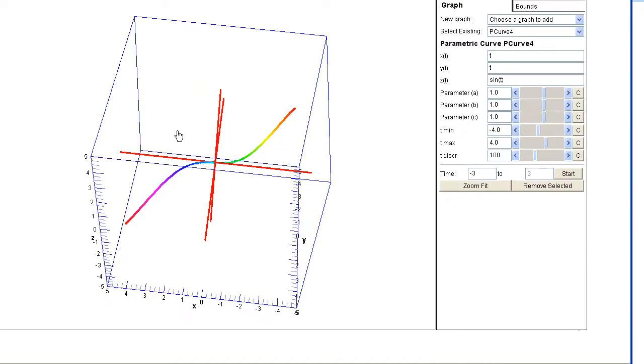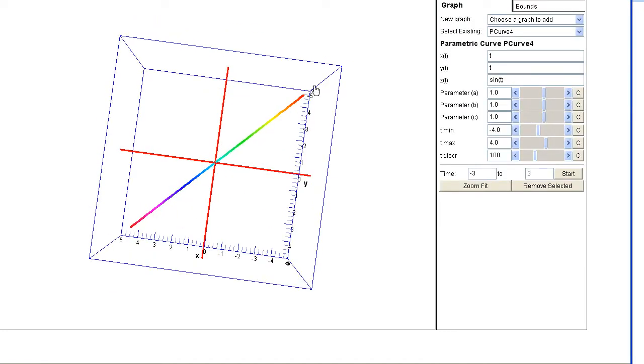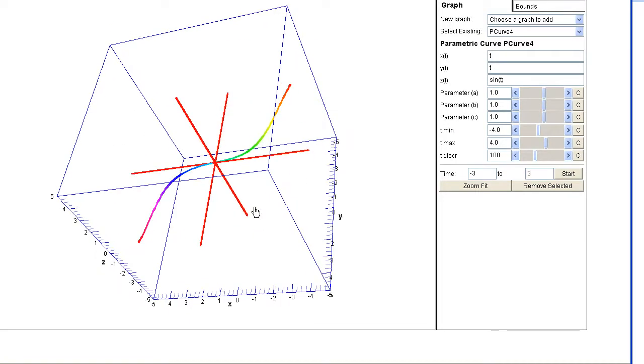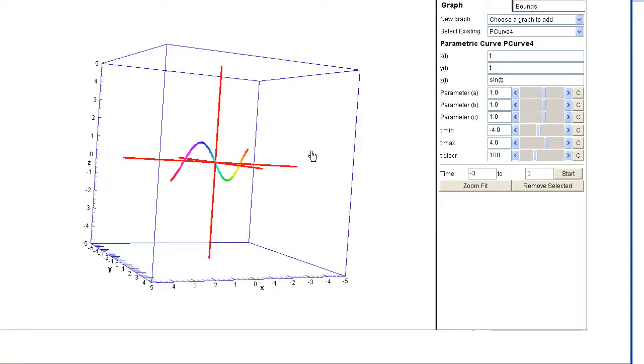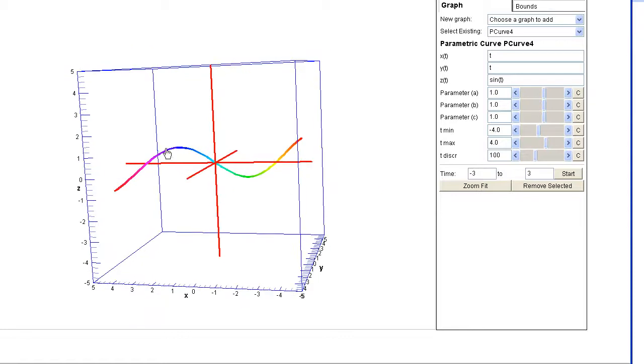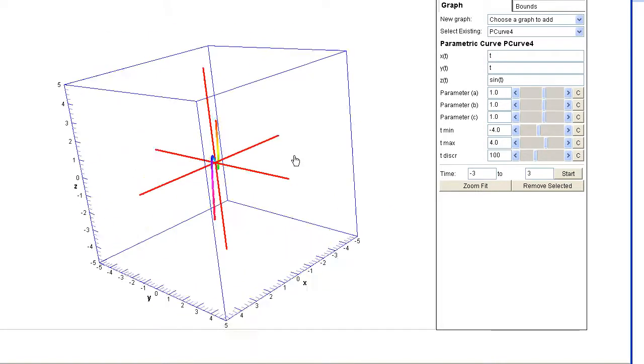And so if we were to look at the graph, notice that x is equal to y, giving us the line in x and y. Meanwhile, the z value is oscillating. So as we move along that, the z value is going up and down, giving us this sine function.